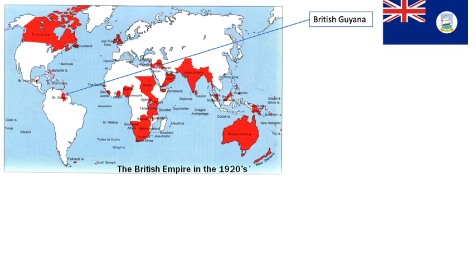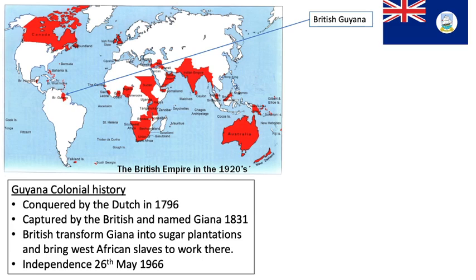The first thing we need to know is that Agard comes from British Guyana, which is a colony at the top of the South American continent on the Caribbean Sea. Looking at the British Empire in the 1920s and a little bit of Guyana's history, we can see that the colonial presence — the presence of white European settlers — really dominates that history. It's first conquered by the Dutch in 1796, then captured by the British and named British Guyana in 1831, where the British transformed Guyana into sugar plantations and started to import West African slaves through the transatlantic slave trade. Independence doesn't come until the 26th of May 1966, when Guyana becomes an independent country in its own right.